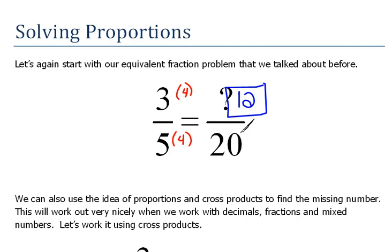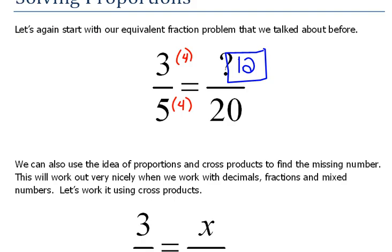Now, when we're working with proportions, we can find this missing number by using the cross product method.